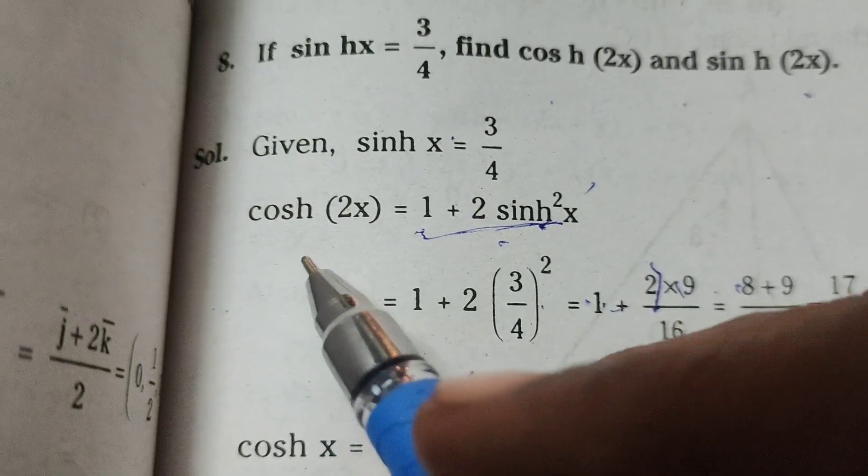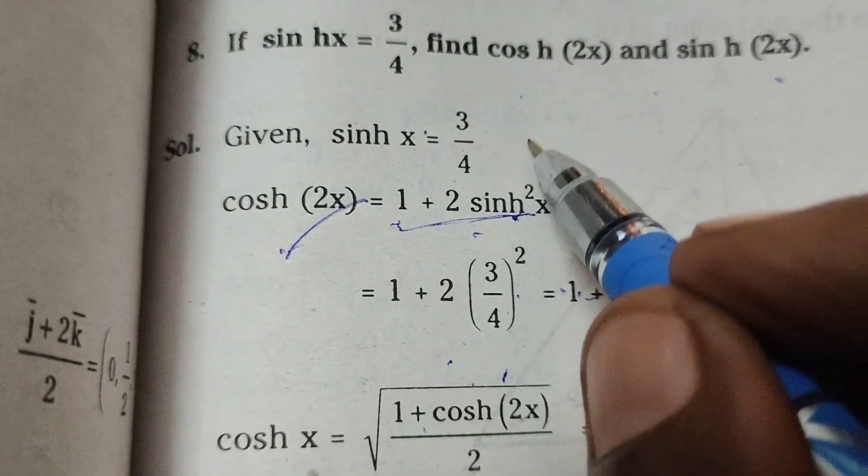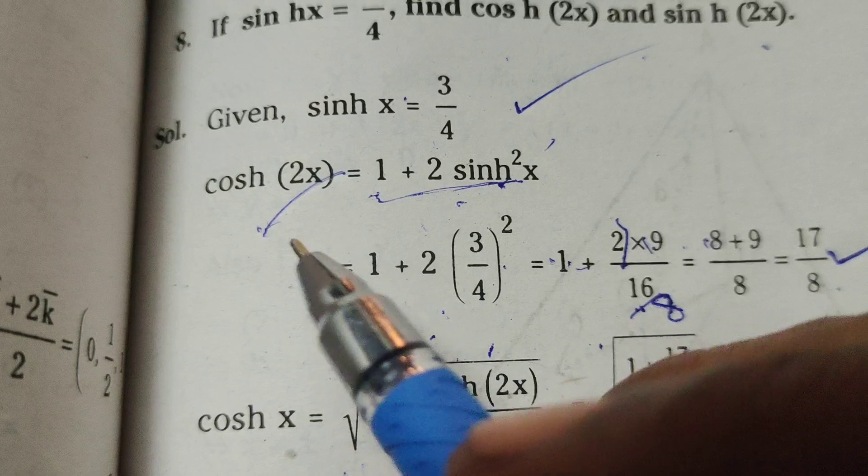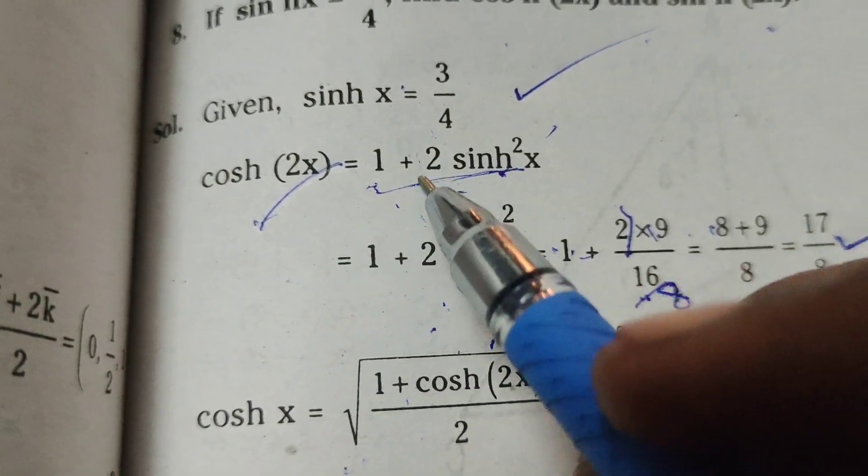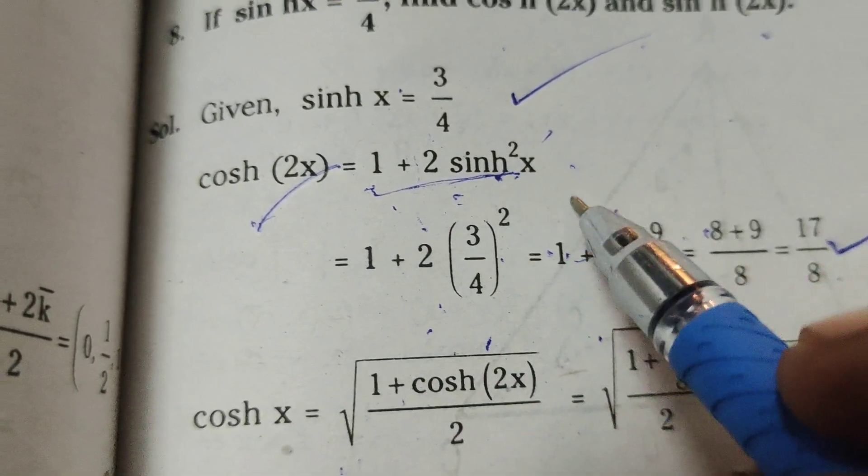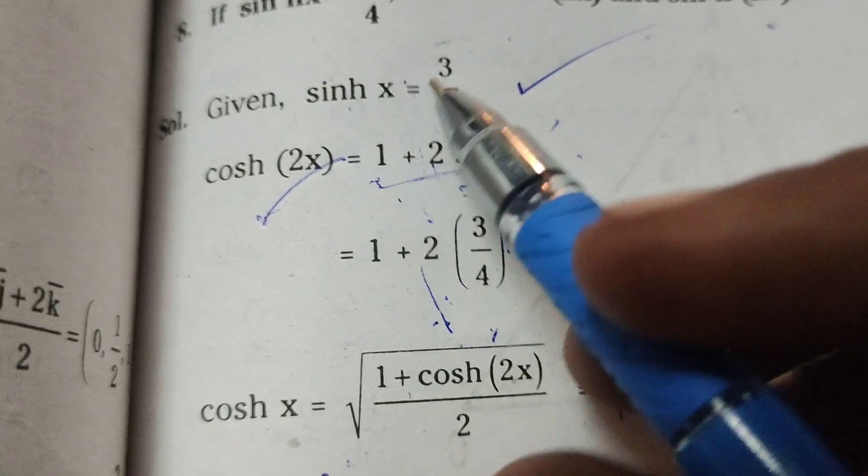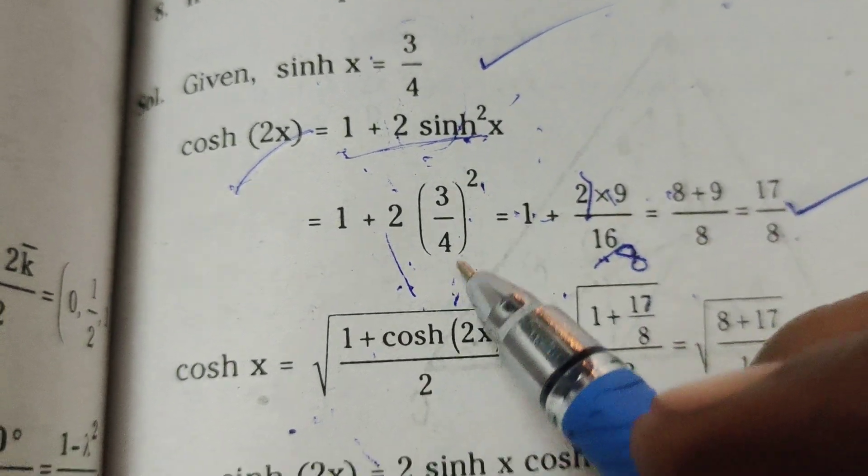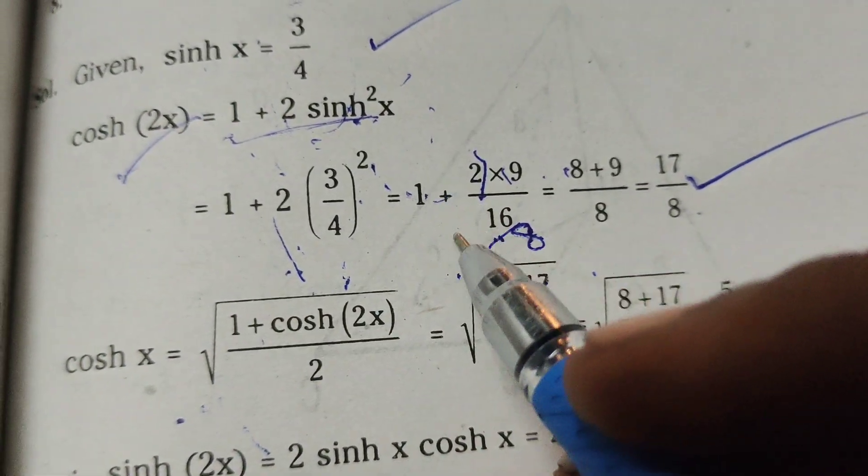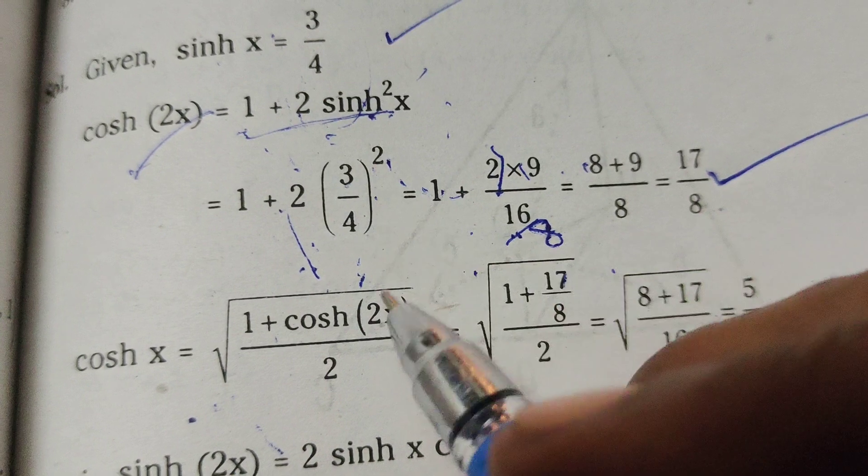First of all, find cosh(2x). Given sinh(x) equals 3/4, write the formula: cosh(2x) = 1 + 2sinh²(x). That's 1 plus 2 times the given sinh(x) value, 3/4 squared. So 1 plus 2 times 9/16.